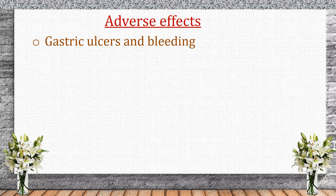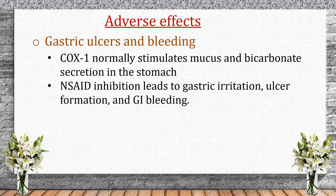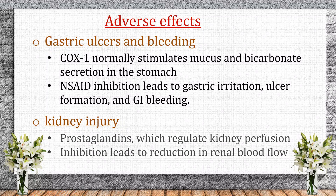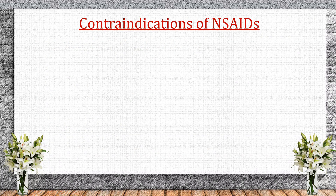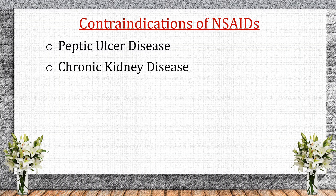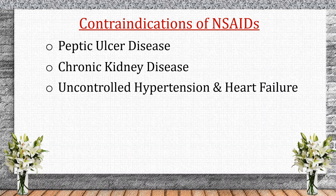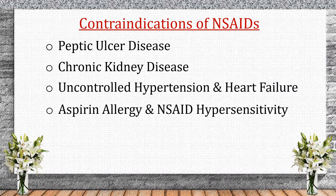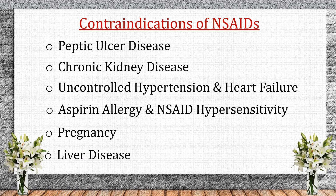Although NSAIDs are widely used, they are associated with several side effects. Gastric ulcers and bleeding: COX-1 normally stimulates mucus and bicarbonate secretion in the stomach; NSAID inhibition leads to gastric irritation, ulcer formation, and GI bleeding. Kidney injury: prostaglandins help maintain kidney function, and NSAID inhibition can reduce renal blood flow. Contraindications include peptic ulcer disease, chronic kidney disease, uncontrolled hypertension and heart failure, aspirin allergy or NSAID hypersensitivity, pregnancy (third trimester) due to risk of premature ductus arteriosus closure, and liver disease or bleeding disorders.